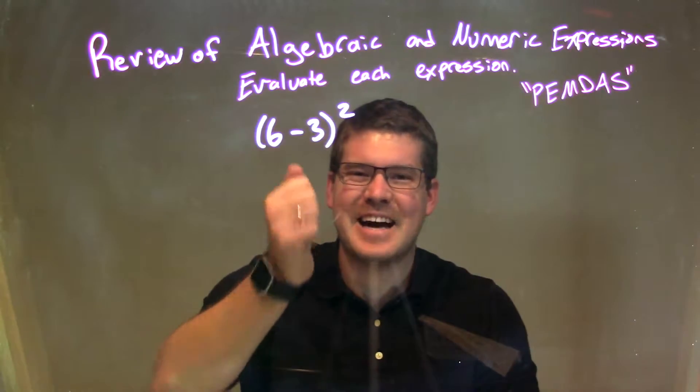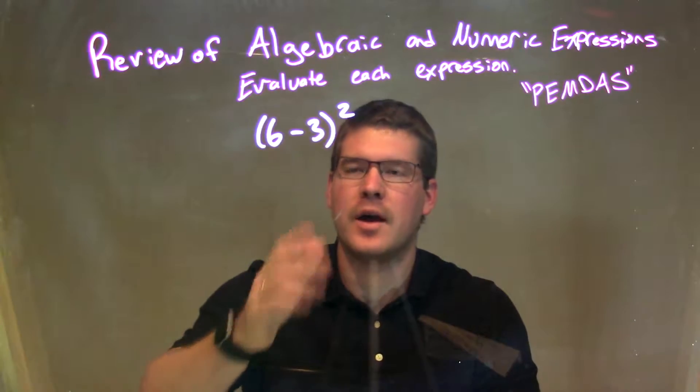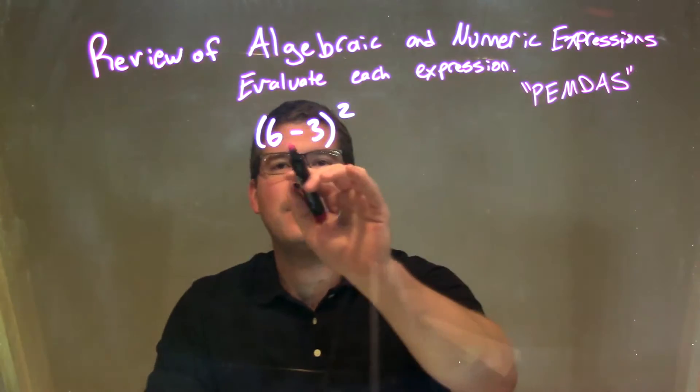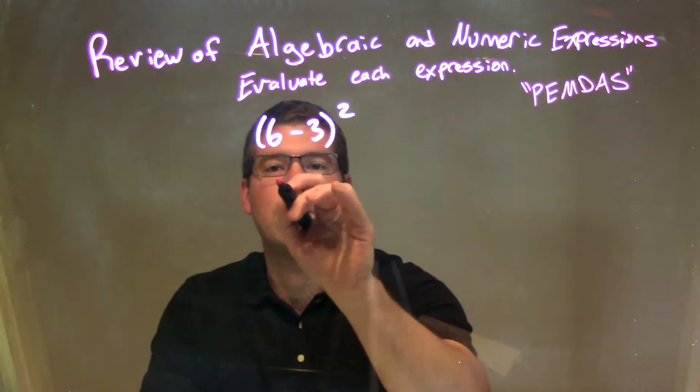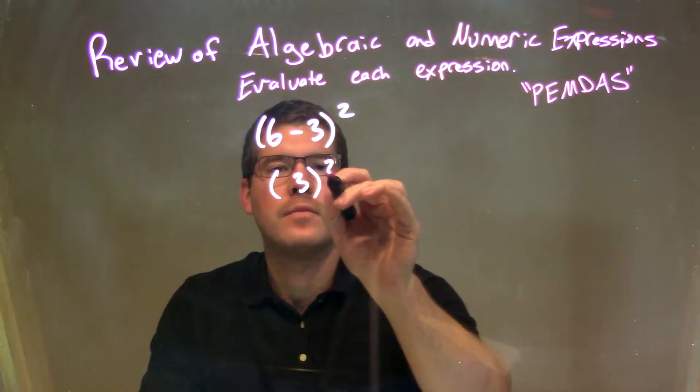Well, we have to deal with this inside of the parentheses first, okay? Inside the parentheses, that's our first step, is 6 minus 3. 6 minus 3 comes out to be 3 squared.